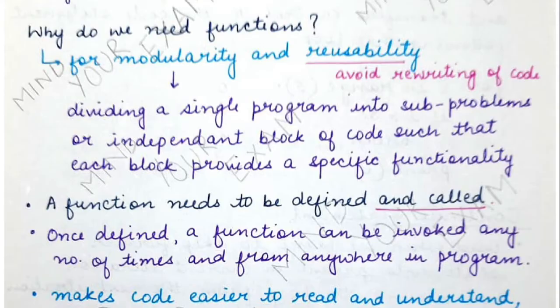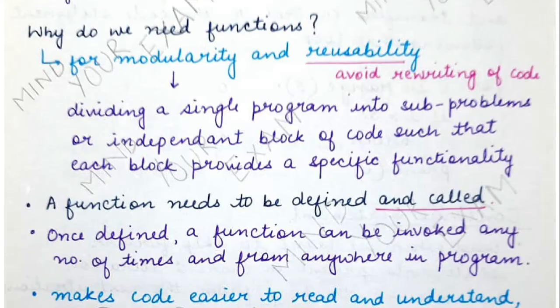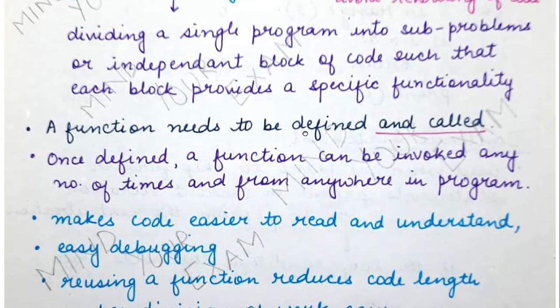By modularity, we basically divide a single program into sub-problems or sub-tasks such that each sub-task provides a specific functionality to the program. Since these are independent blocks — meaning the code written in one particular section is not completely dependent on another section — you can divide such code into two different parts or two different functions. This will become more clear as we start writing functions throughout the chapter.